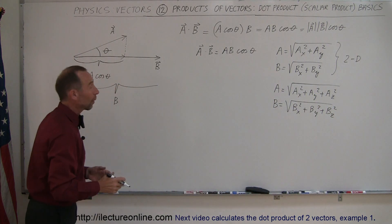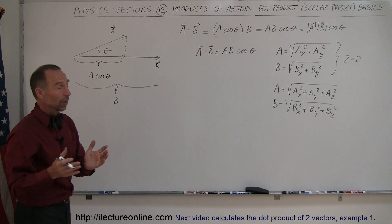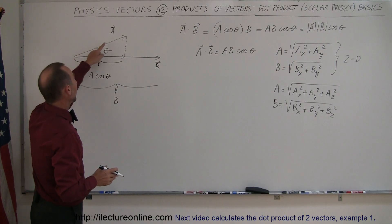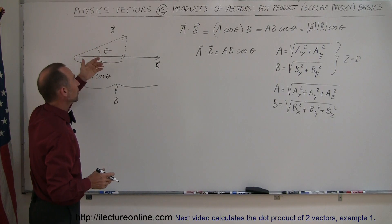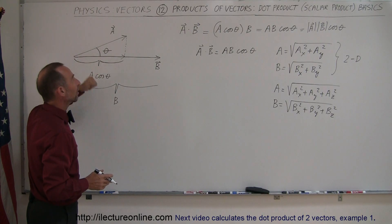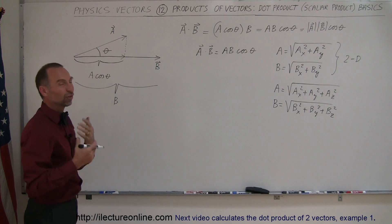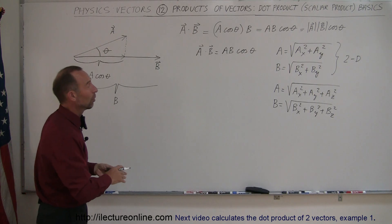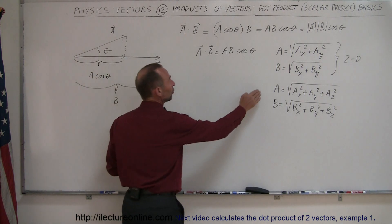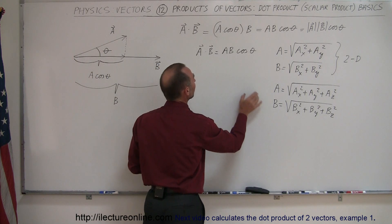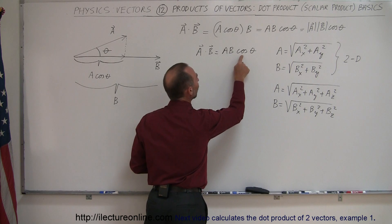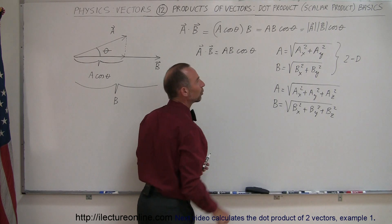So if you want to take a dot product, you take vector A and vector B, find the x, y, and z components, square them, add them together, take the square root to get the magnitudes of the two vectors, then multiply those magnitudes together times the cosine of the angle between them.